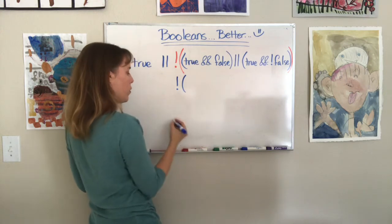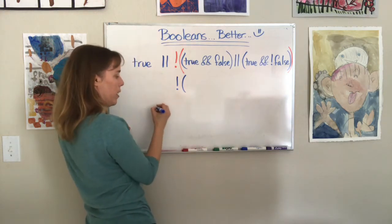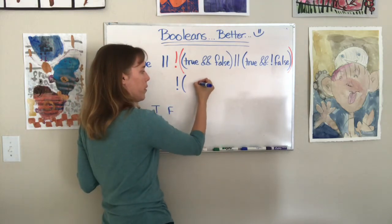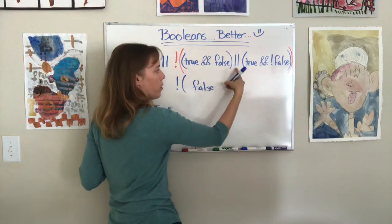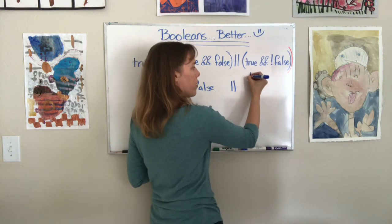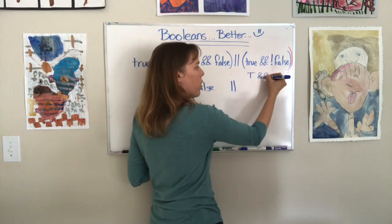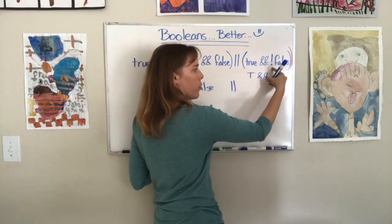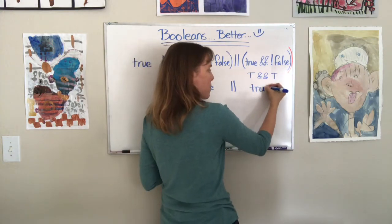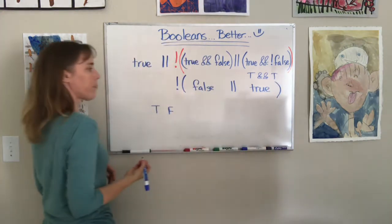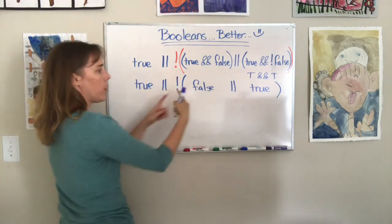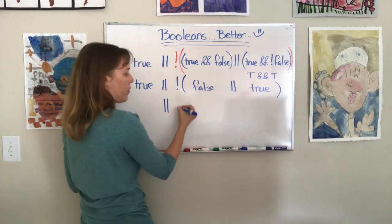True and false. So remember in our table for AND, if you had a true and a false, it comes out to be false. So this is false. Bring down the OR. True and not false. Oh my goodness. This is true and not false is true. True and true. What does that give you?